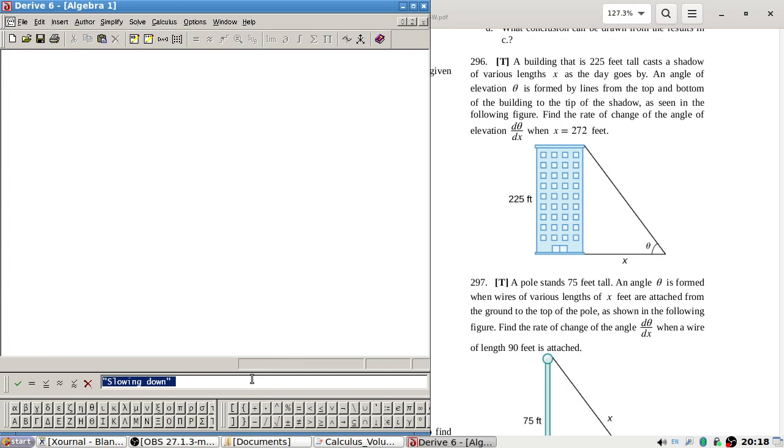296. A building that is 225 feet tall casts a shadow of various lengths x as the day goes by. An angle of elevation theta is formed by the lines from top to bottom. Find the rate of change of the angle of elevation d theta dx when x is 272 feet. Okay, so theta would be tan inverse 225 over x. So if we differentiate this and sub in 272, we've got our answer. There we go.